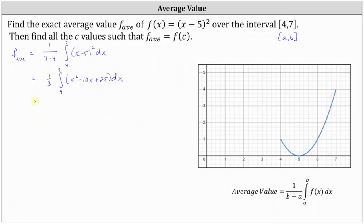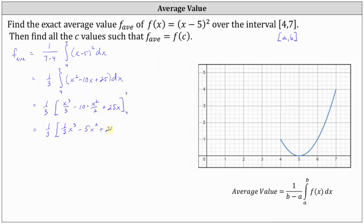The next step will determine the antiderivative and evaluate the integral. The antiderivative of x² minus 10x plus 25 is x³ divided by three, minus 10 times x² divided by two, plus 25x, with limits of integration from four to seven. We can write the antiderivative as one-third x³ minus 5x² plus 25x.